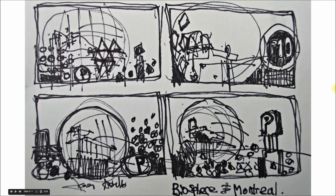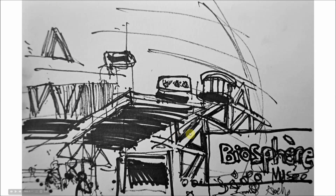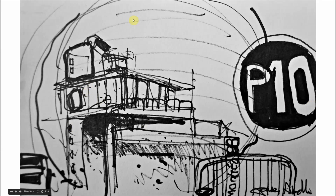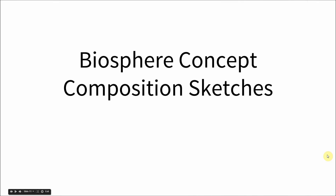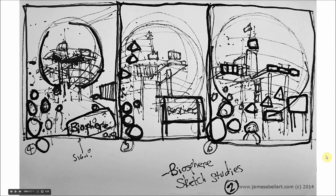This is a close-up of the Metac structure. I'm pushing things around and I quite like this. Here's the structure — I didn't bother doing all the lattices — and there's the internal structure. There's a little sign and I like this road sign 'P10'; it kind of stood out for me. So the biosphere concept composition sketches: this is where I went home, looked at the photographs, and started developing what the final composition will be.